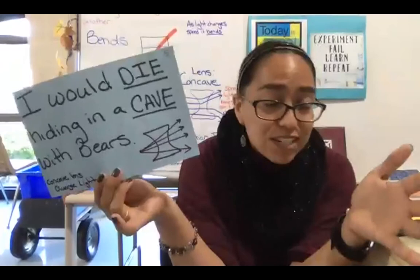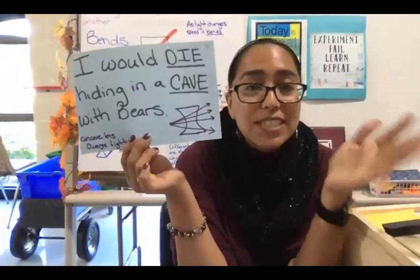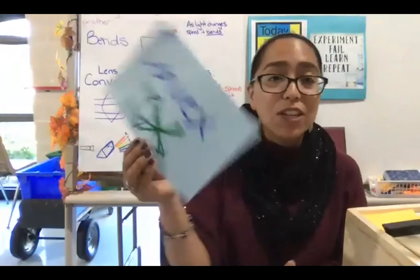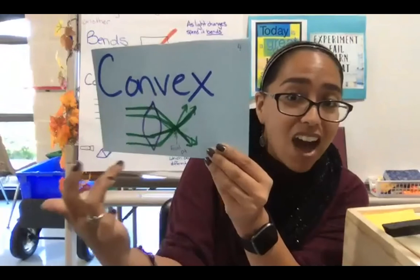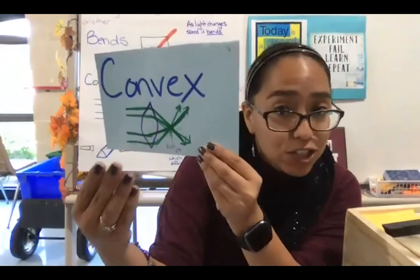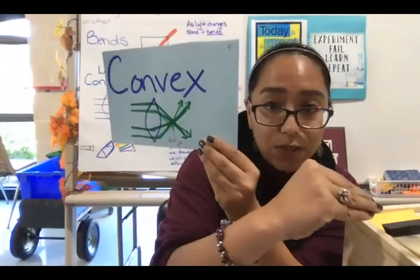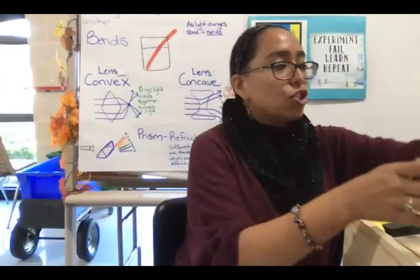We have another type of lens: convex. This lens is fat in the middle but skinny on the edges. When light passes through it, it's converging — meeting at a focal point. The light comes together when it's convex. I'm going to share my iPad screen and we're going to look at some examples of lenses and how they affect what we're seeing.